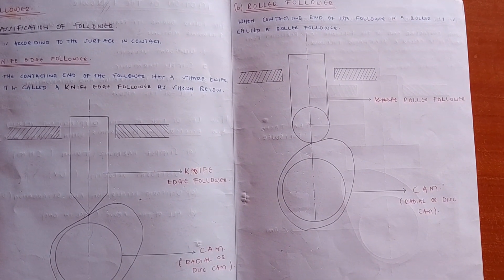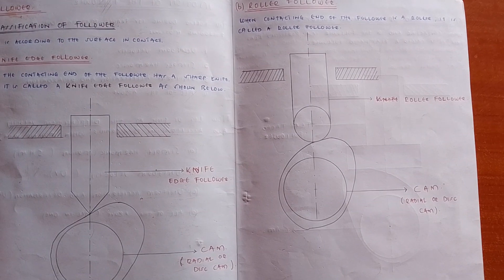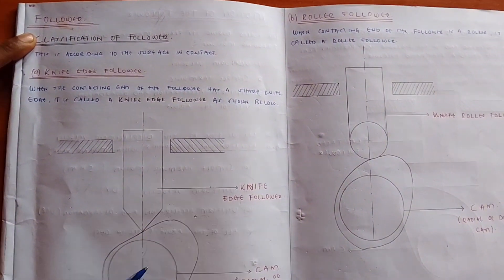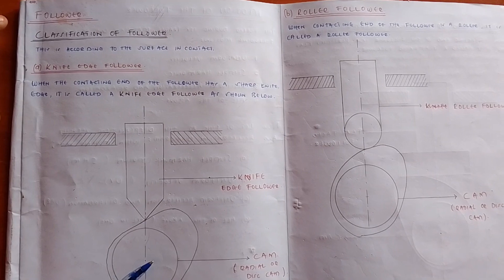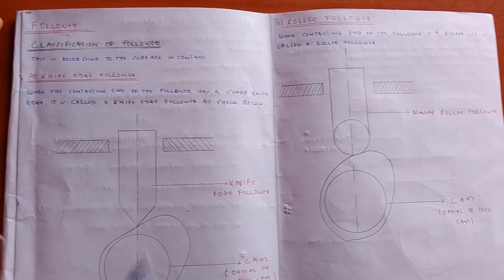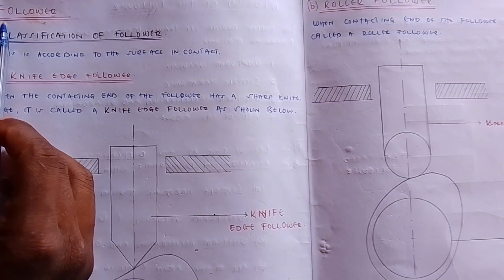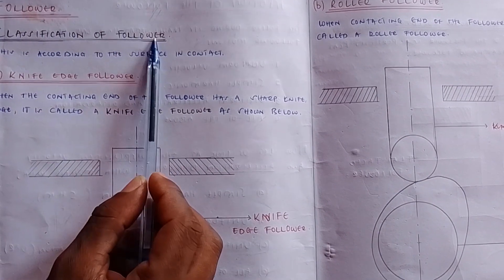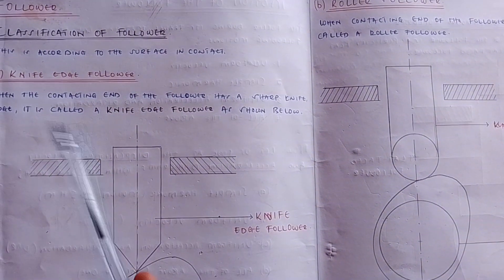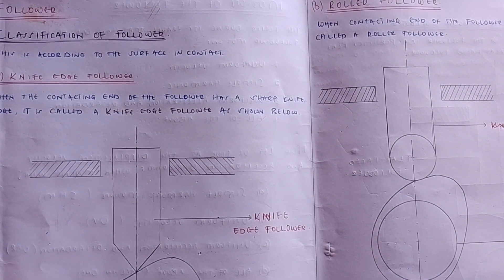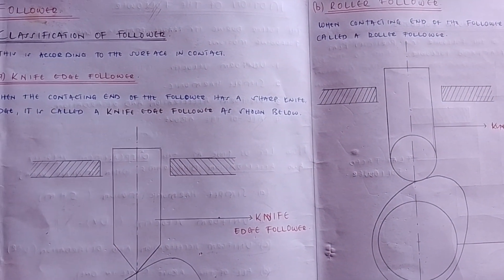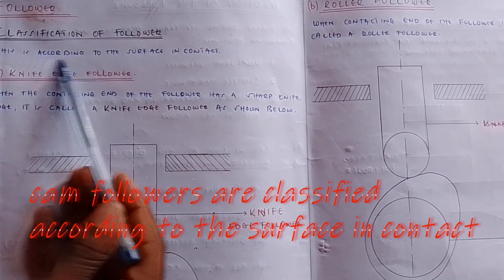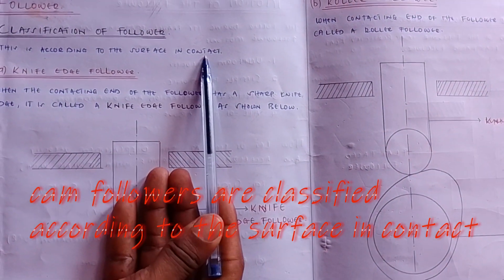In the previous video I showed you about cams. Now I want to show you about followers. Remember, cams must also have another element called a follower. In the next subtopic we have the follower, and we will look at the classification of followers — just as we looked at the classification of cams, where we saw there are two types.